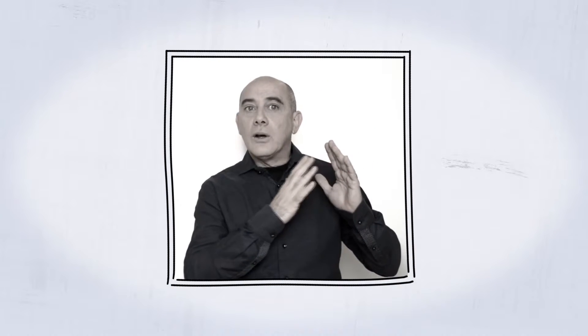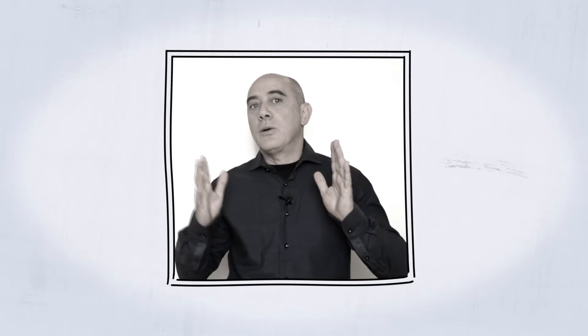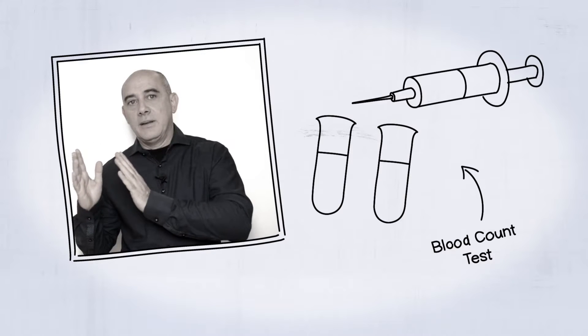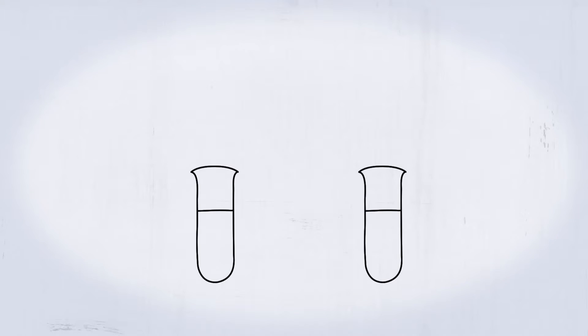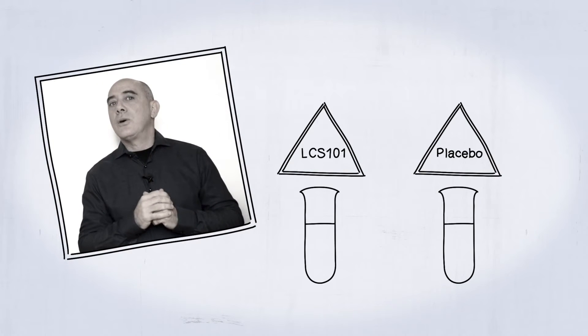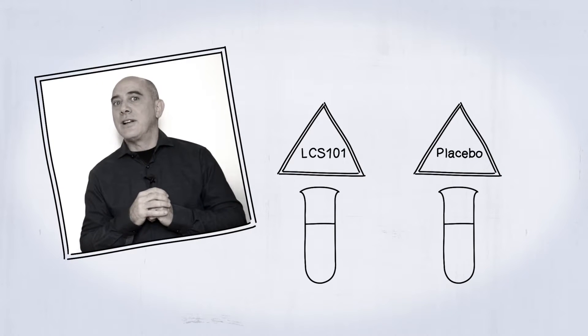All along the chemo regime, the patients are getting chemo at about every three weeks and their blood count is checked before each chemotherapy. Then we compared the two groups, the real one LCS101 comparing to the placebo, and let me show the results, the outstanding results we got.